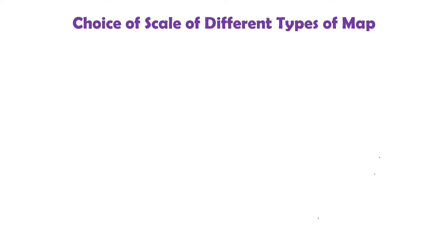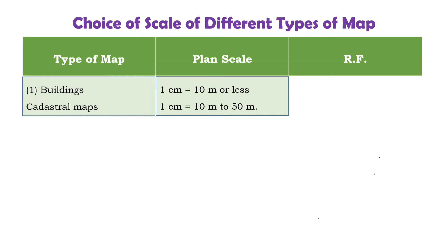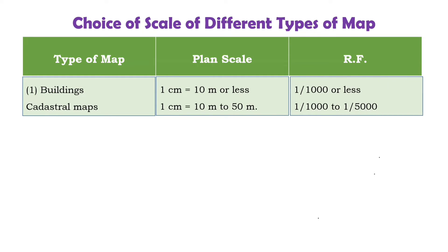Now let us see the choice of scale for different types of maps. For a building map, the scale used is 1 centimeter equals 10 meters or less, with RF of 1 in 100 or less. For a cadastral map, the scale is 1 centimeter equals 10 meters to 50 meters, with RF of 1 in 1,000 to 1 in 5,000.